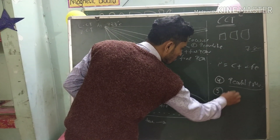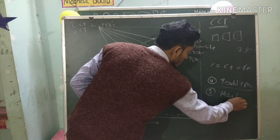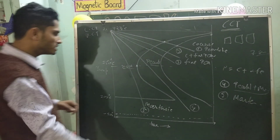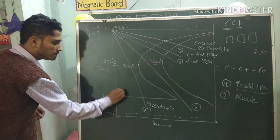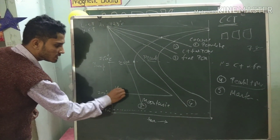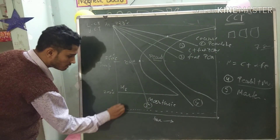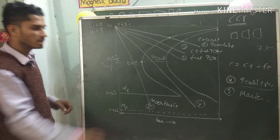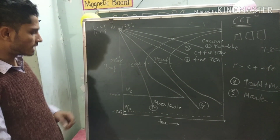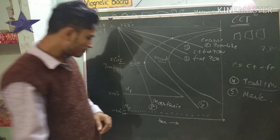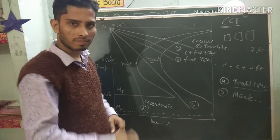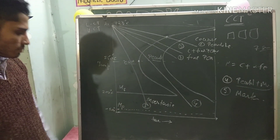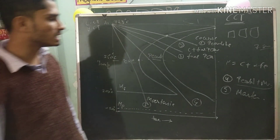This is Ms, that is the Martensitic Starting temperature. And this is Mf, that is the Martensitic Finish temperature. Martensite formation ends at minus 50°C.